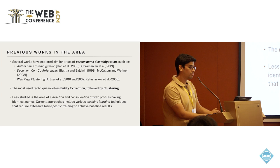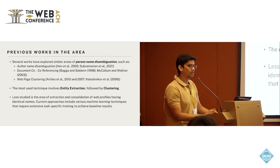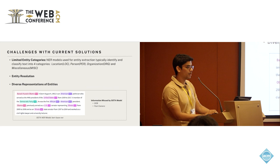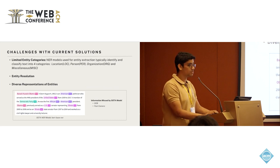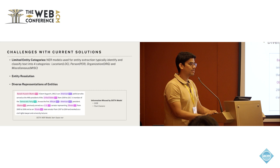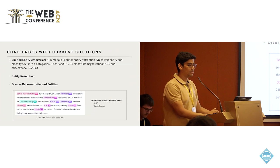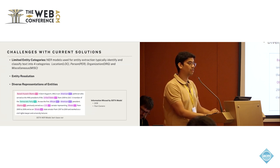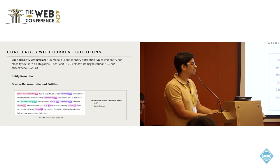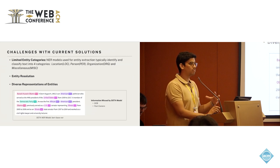There are some challenges with current approaches that are not addressed effectively. The first challenge is the limited range of entity classification categories. Typically, state-of-the-art models only classify entities into four categories: locations, person, organization, and miscellaneous. But that is not enough. In today's world where information is so nuanced, just four categories is insufficient.